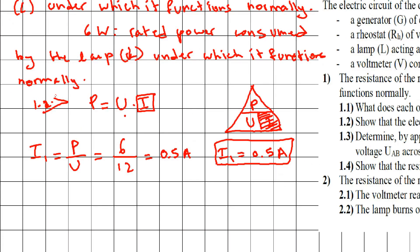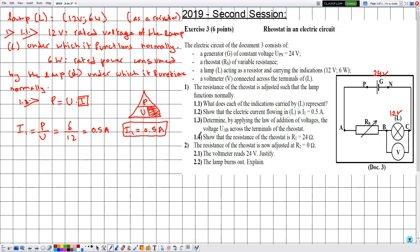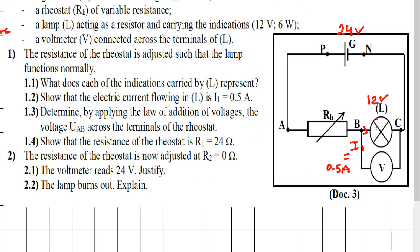Note that P = U × I is not a law but a definition — the electric power is given by the product of voltage and current. The current I1 = 0.5 amperes is labeled as the current traversing the lamp L in the circuit.